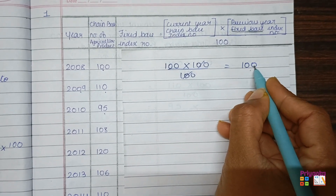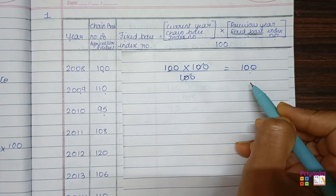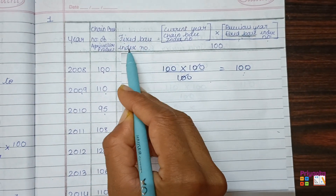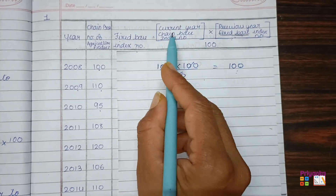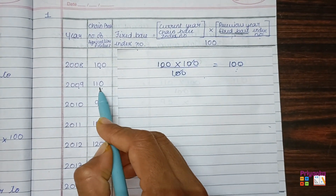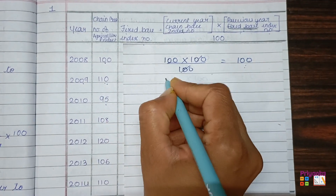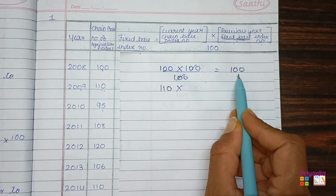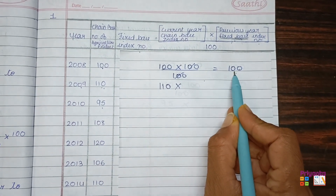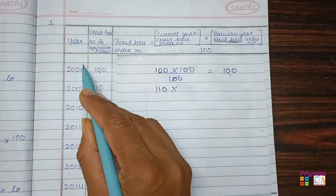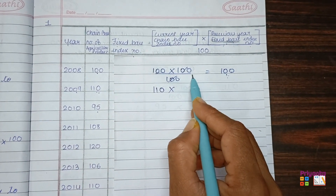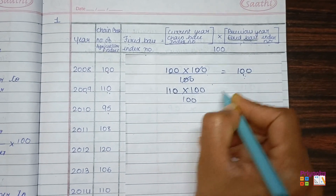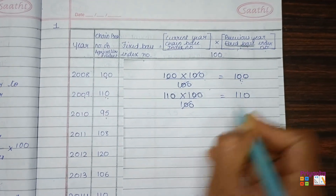This is the previous year fixed base index number, and this is the fixed base index number we found. Moving to the next: for 2009, the current year chain base index number is 110, multiplied by the previous year fixed base index number. For 2009, the previous year is 2008 and its fixed base index number is 100. Divide by 100 — the 100 cancels and the answer is 110.